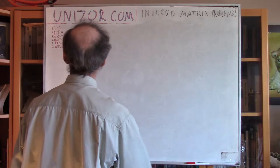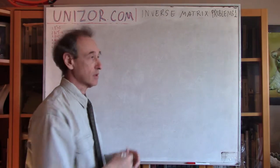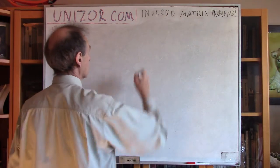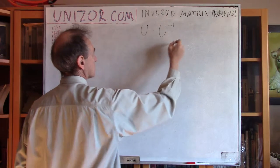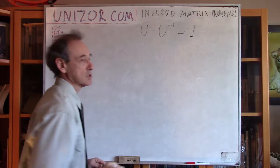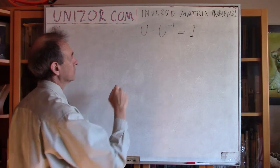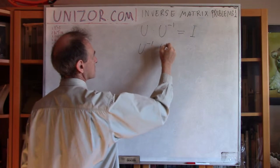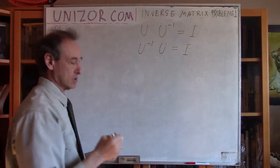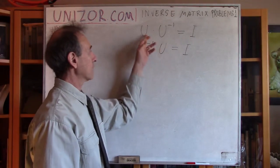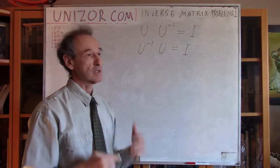Next one: what if I invert a matrix twice? Consider matrix U is invertible. From matrix U I get U⁻¹, and by definition U times U⁻¹ equals the identity matrix. This is the definition of the inverse matrix, and I assume that my matrix U is invertible, which means its inverse does exist.